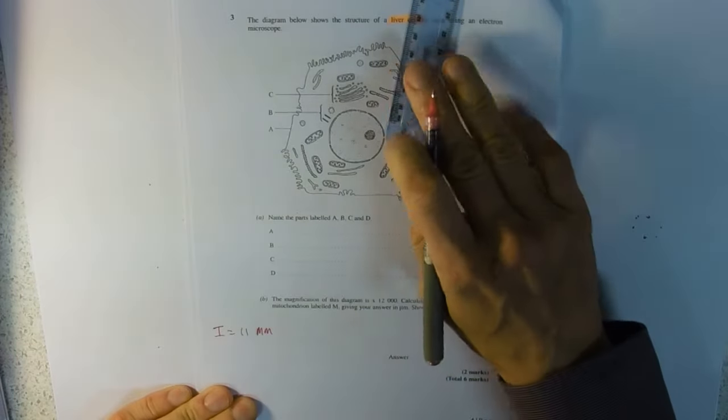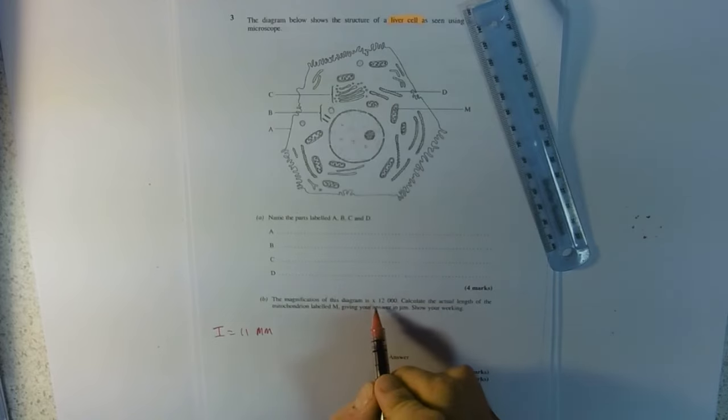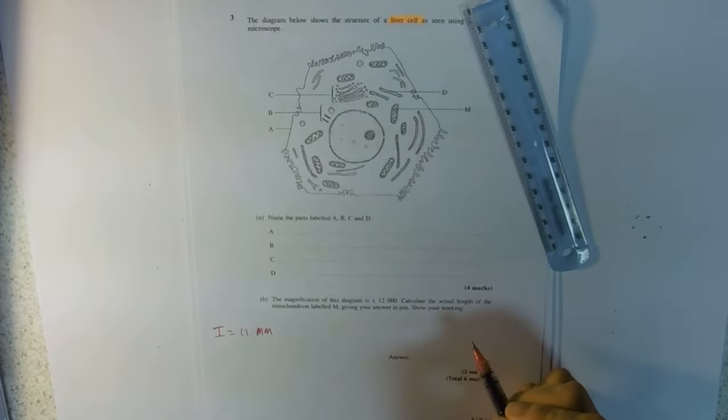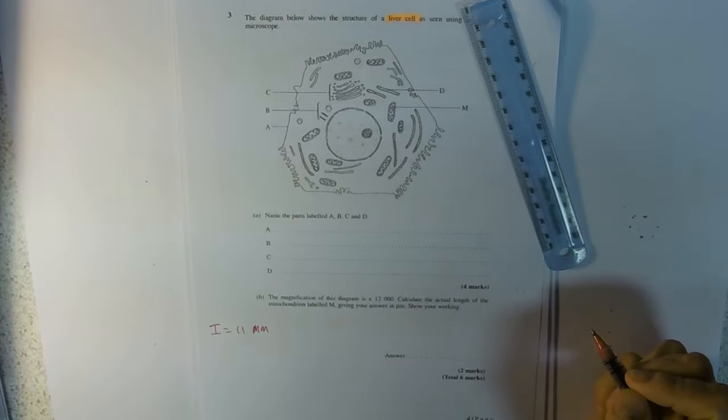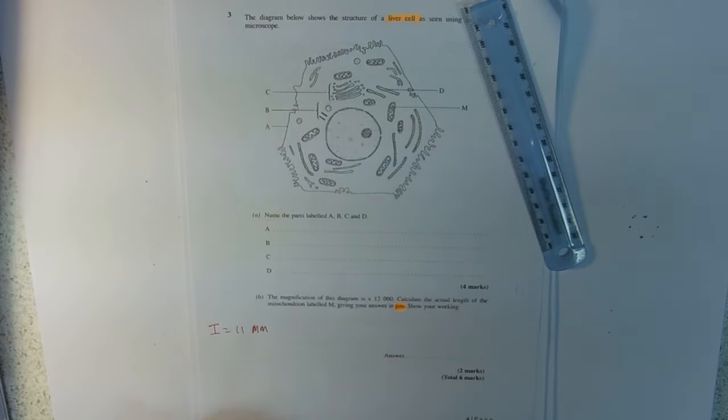Measure it in millimeters, so your image size is 11 millimeters, and the clue here is it's 12,000 times too big. So we've got 11 millimeters here but it's actually 12,000 times smaller than that, so you're going to divide it and give the answer in micrometers.